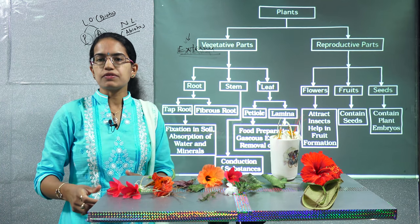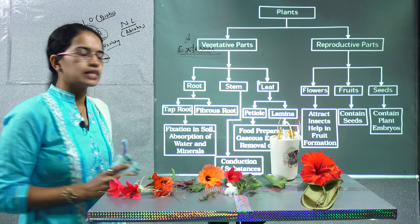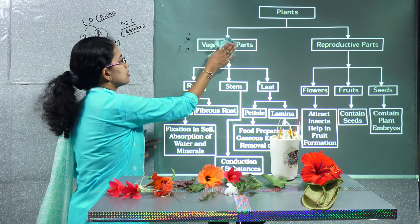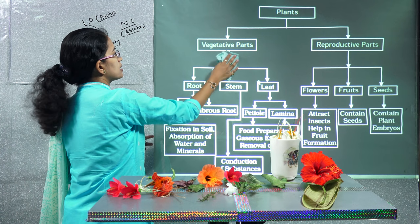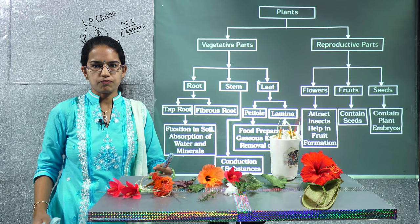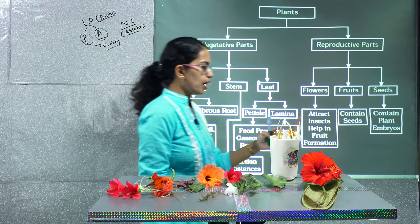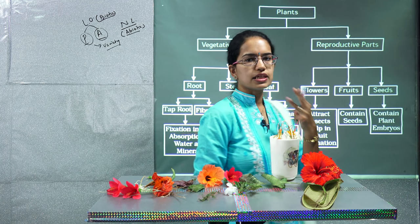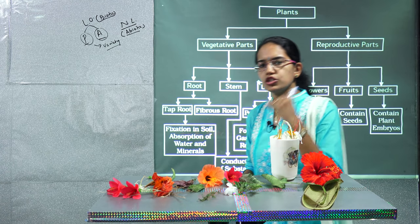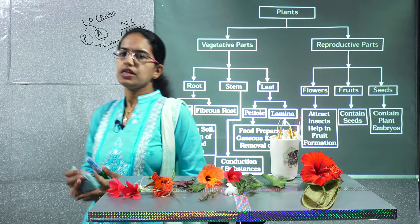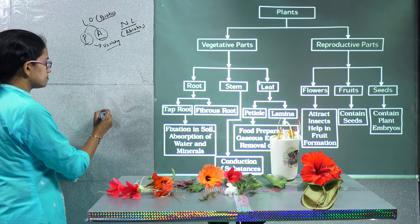Within plants we focus on two major parts. The first is the vegetative part and the next is the reproductive part. Under the vegetative part we consider three important parts: root, stem, and leaf. So let's understand these one by one.